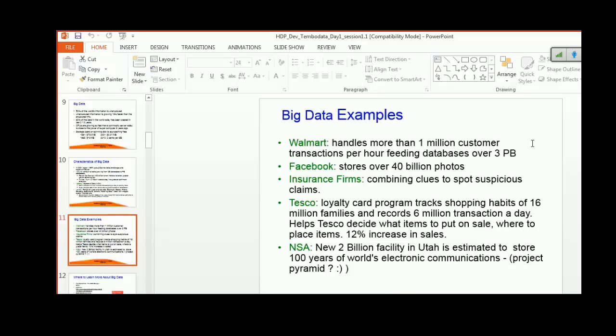After the study, Tesco made changes in the malls. They saw an increase of 12 percent in sales, and all this data they fetched from their archives. NSA is building a $2 billion facility in Utah which is estimated to store 100 years of world economic communication data. This is called Project Pyramid. You can recollect this because Edward Snowden leaked this to the world.